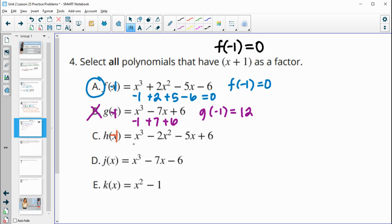Negative 1 into h. So negative 1 cubed gives us negative 1. Negative 1 squared is positive 1 times negative 2 is negative 2. Negative 5 times negative 1 is positive 5. And then we have plus 6. So if we add these together, we get negative 3 plus 5 is 2 plus 6 is 8. So h of negative 1 is equal to 8. So this is not a factor for g.